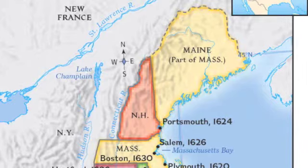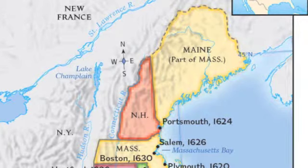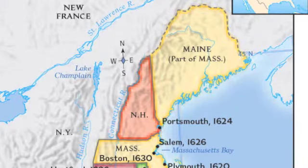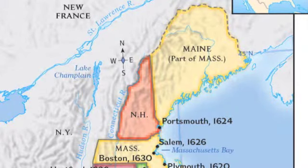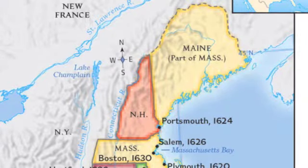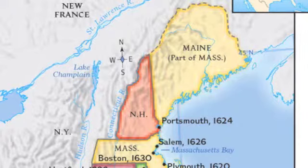They developed a diverse economy. Although farming was the most common occupation, New England also became a center for colonial shipping, with major ports such as Boston and Salem. So you have fishing, shipbuilding, and some of the related industries.